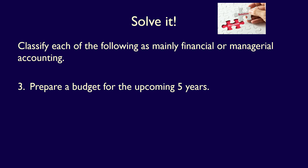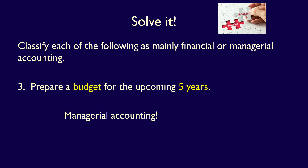Number three: Prepare a budget for the upcoming five years. Budgets are all about predicting the future, and it says 'upcoming five years.' This is Managerial Accounting because it is focused on internal users such as managers. Budgets are used to motivate managers and provide them with relevant information for future decision making.